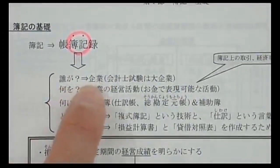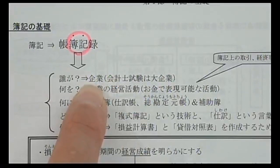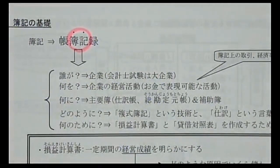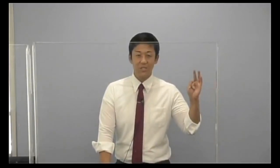帳簿に記録するといっても、誰が記録するのか、目的は何か、どうやって記録するのかなど疑問点があります。会計士試験は大企業を前提とする簿記です。企業が帳簿に記録をします。会計士が相手にするのは上場会社、資本金5億円以上または負債総額200億円以上の会社です。